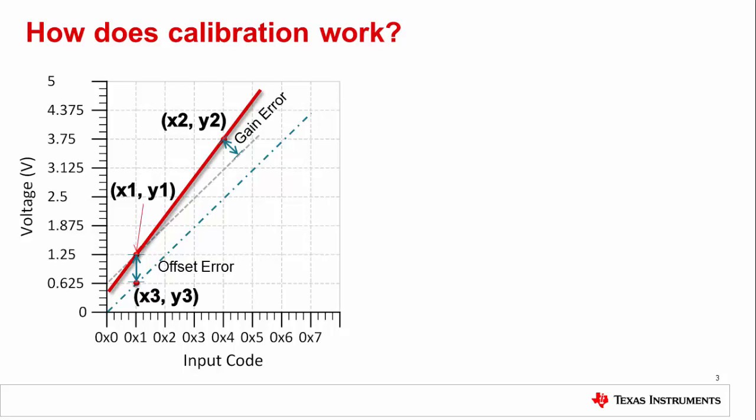Calibration is done in the linear region of the DAC, which is where the offset and gain error are measured. The datasheet specifies the codes at which these measurements are taken. The easiest way to do the calibration is by using a two-point approach, taking points on either end of the linear region.